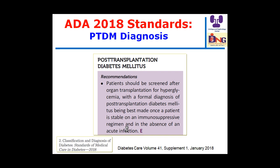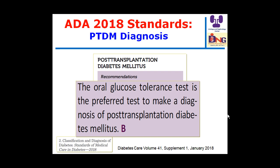The American Diabetes Association recommends that patients be screened after organ transplantation for hyperglycemia, with a formal diagnosis of post-transplant diabetes best made once the patient is stable on an immunosuppressive regimen and in the absence of acute infection. The preferred test for diagnosis is the oral glucose tolerance test, rated as level B evidence.